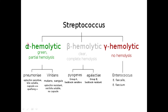Alpha hemolysis means green or partial hemolysis, in which we classify streptococcus pneumoniae and streptococcus viridans. Beta hemolysis means complete or clear hemolysis, in which group A streptococci are strep pyogenes and group B streptococci are strep agalactiae. Gamma hemolysis is no hemolysis, in which we have the enterococci, with further species enterococcus faecalis and enterococcus faecium.